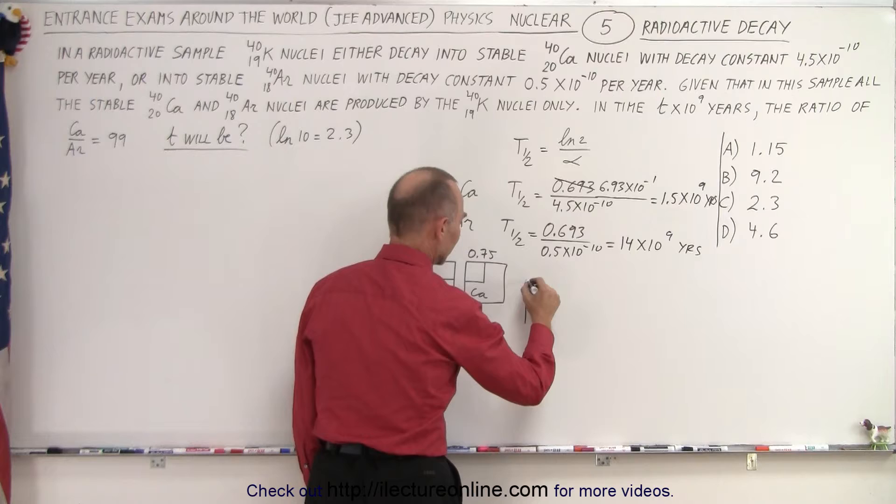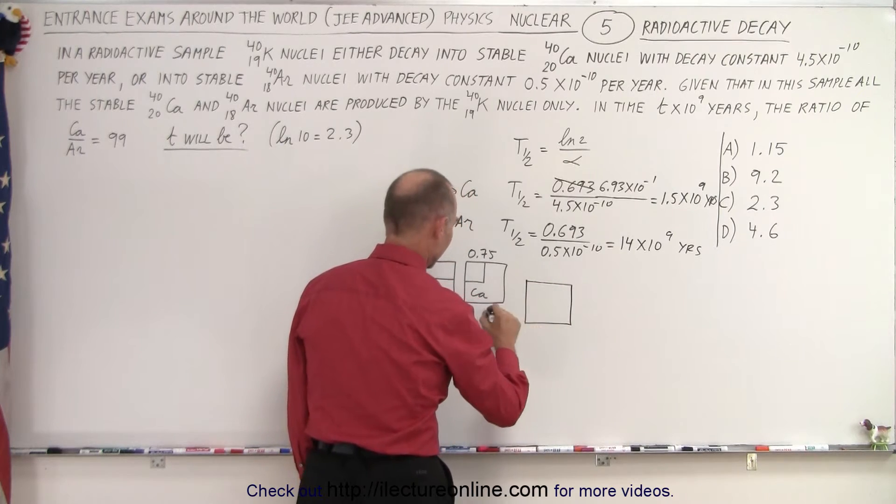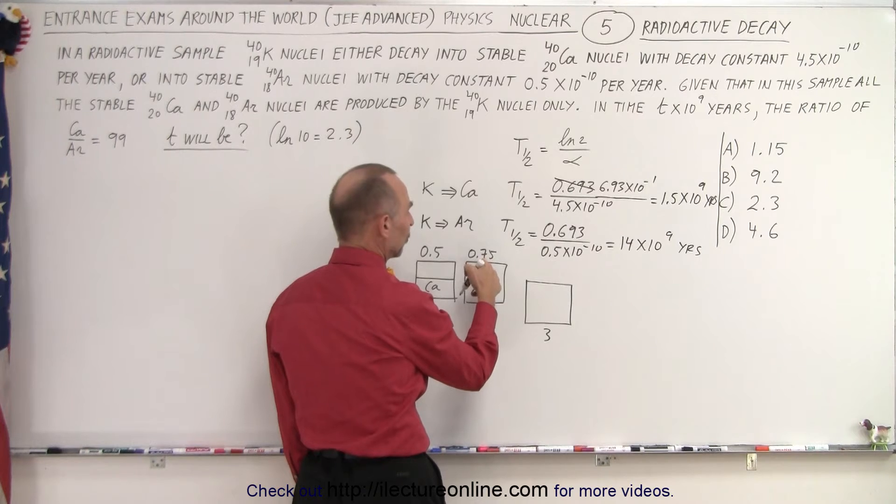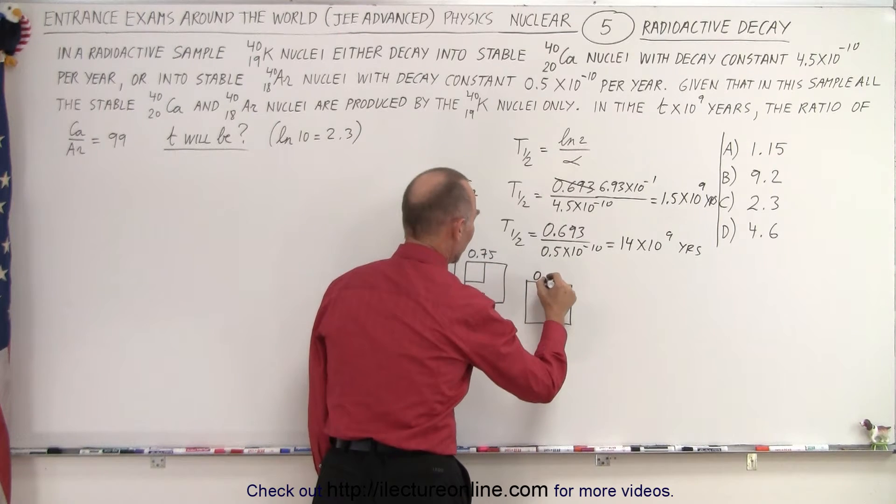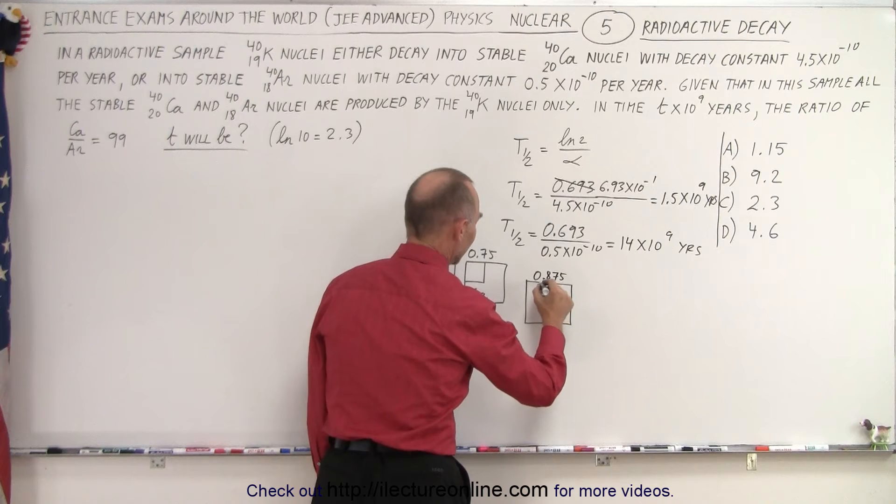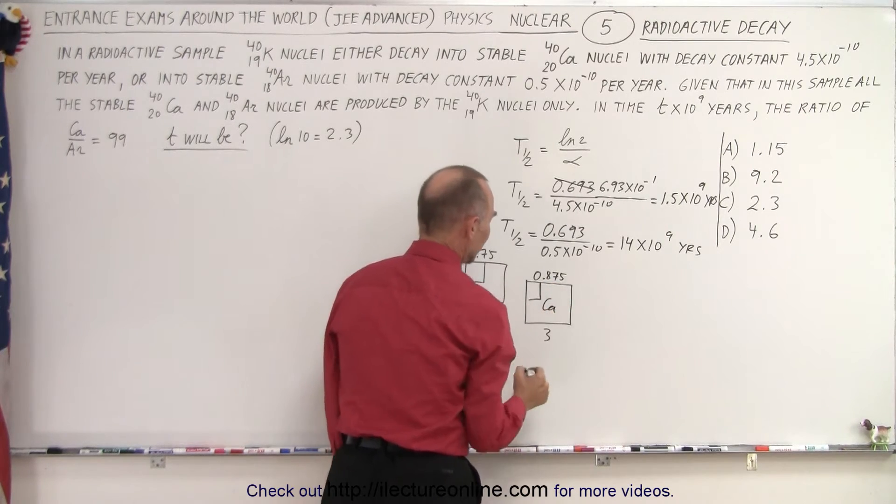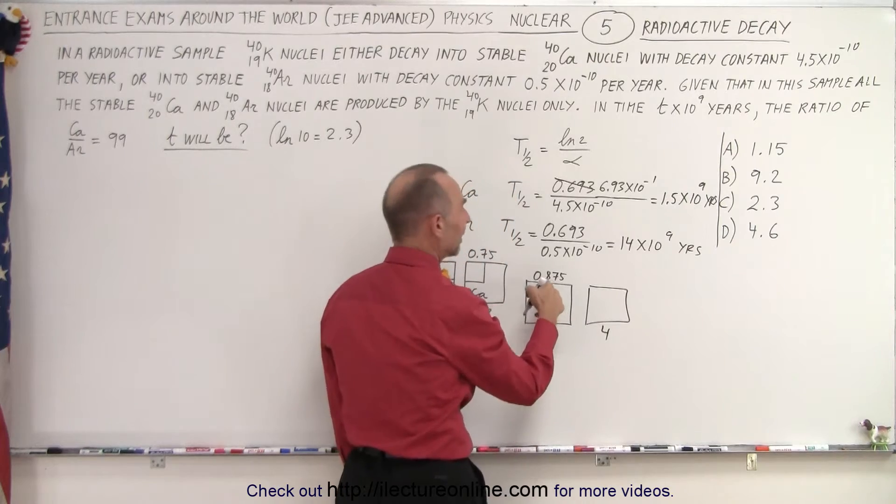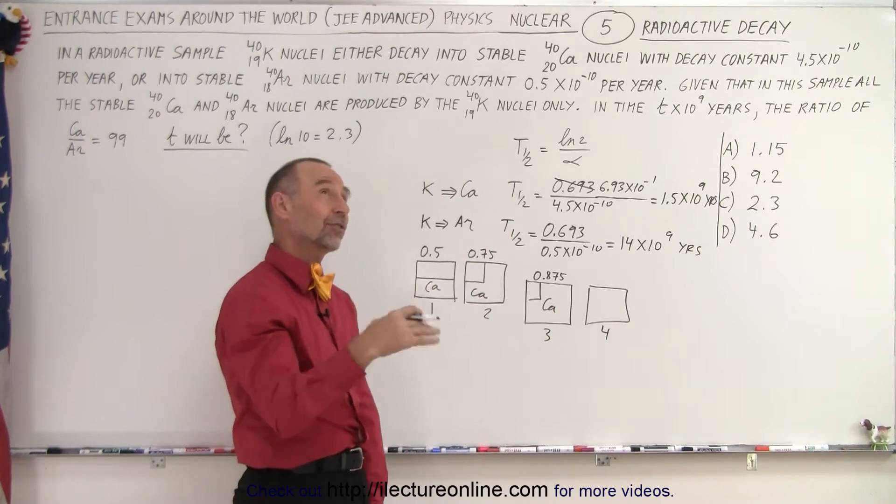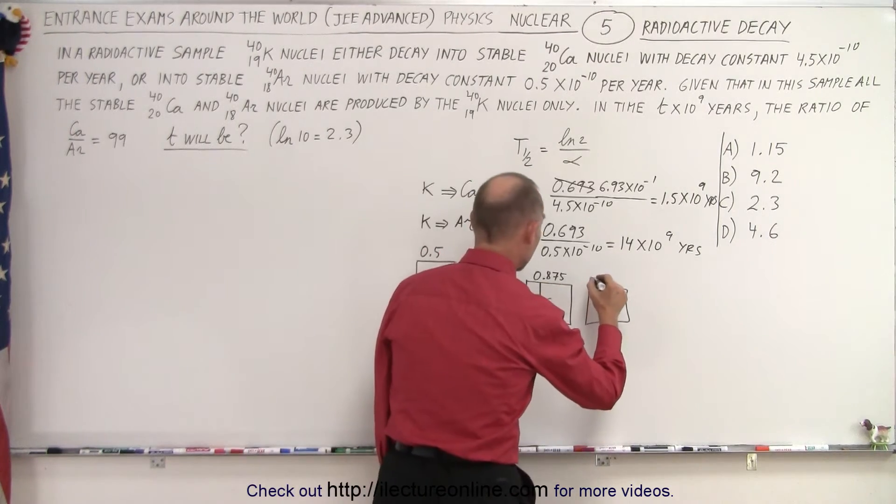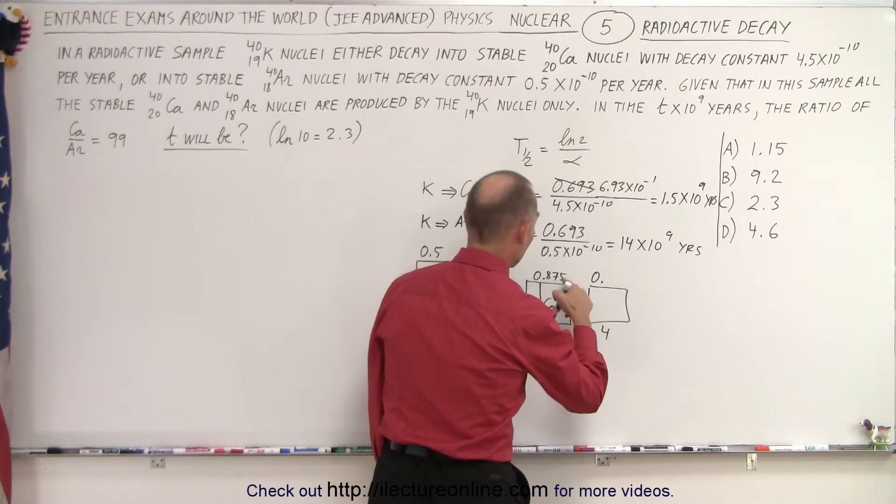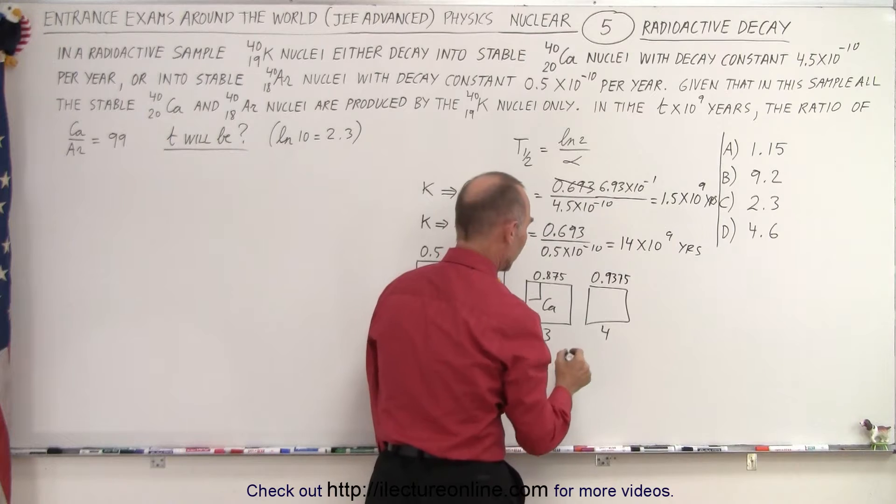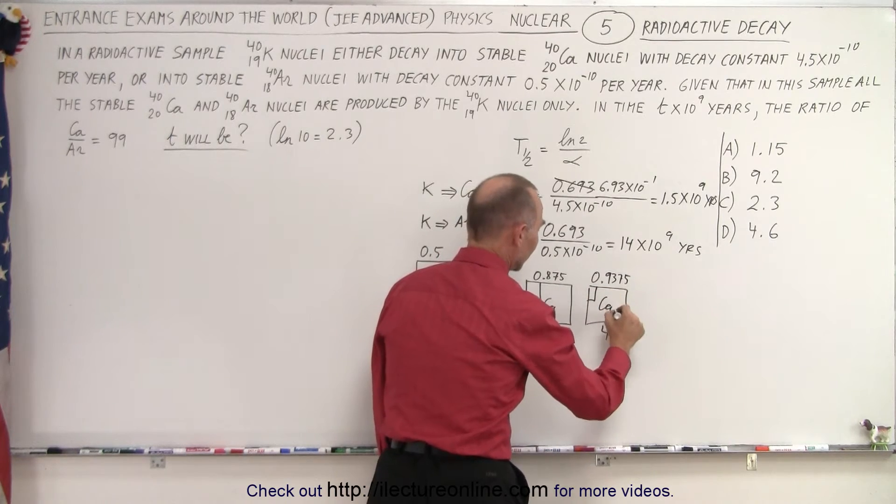After three half-lives, 25 divided by 2 is 12 and a half, so you get 0.875 calcium. And after four half-lives, take half of that, 12 and a half divided by 2 is 6 and a quarter, that would be 0.9375, almost 0.94. So now you have lots of calcium.